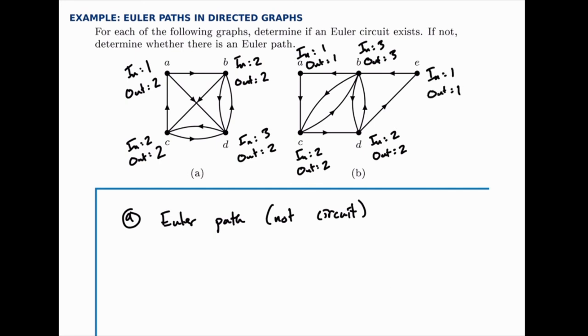So look through all of them and notice that each one of them has an equal in and out degree. So that means that yes, there is an Euler circuit through this one.